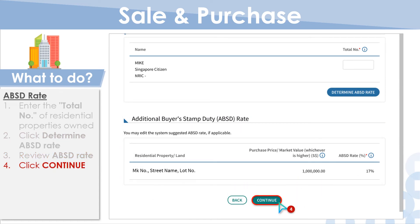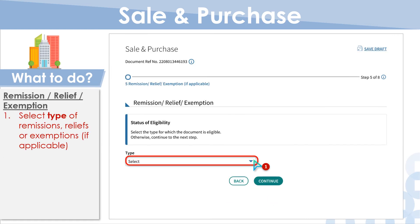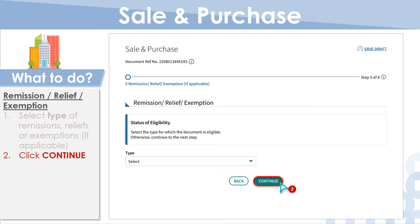Next, proceed to Remission or Relief or Exemption. Any applicable remissions, reliefs or exemptions would be indicated here. Then proceed to the summary.